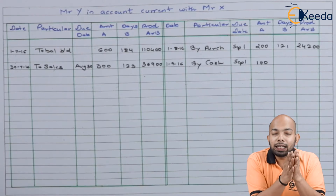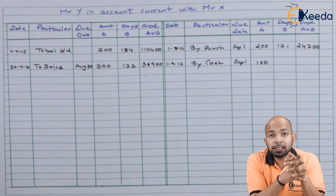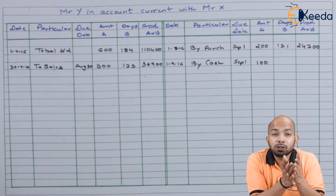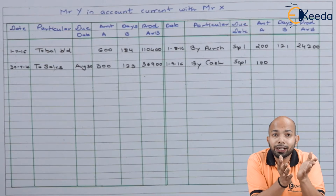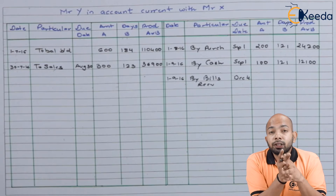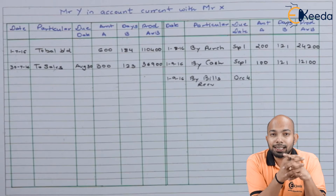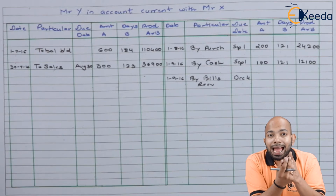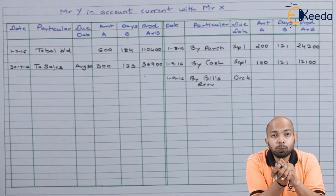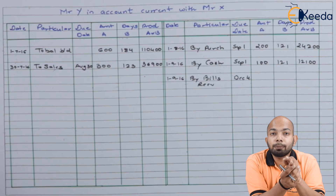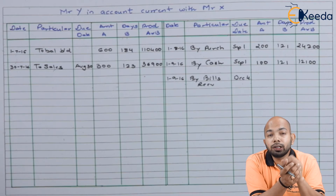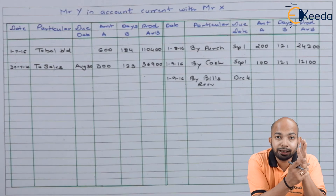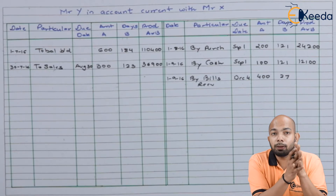Again on 1st of September there was a cash receipt of Rs. 100. As there was no due date mentioned, we take the transaction date as the due date itself. So from 1st of September until 31st of December — again 121 days. Also on 1st of September, a bill was drafted and accepted by Y for a period of 3 months. From 1st of September to 1st of December are the 3 months, plus 3 grace days added, making the due date 4th of December. From 4th of December until 31st of December is 27 days, and the product total comes to 10,800.